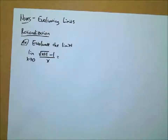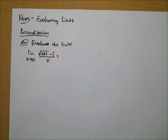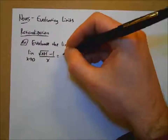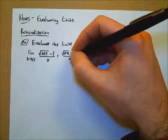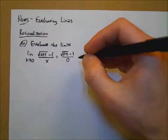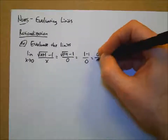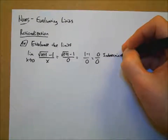Let's do an easy one here to start out. How can we go about evaluating this limit? Substitution — that's right. So let's try that. Zero plus one under the square root, minus one, all over x, which is also zero. Zero plus one is one. The square root of one is one. So it's one minus one over zero, which is then zero over zero — indeterminate form.